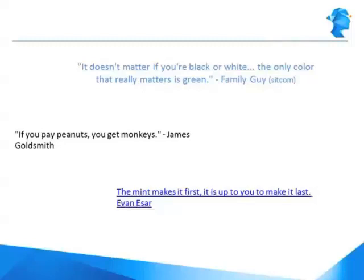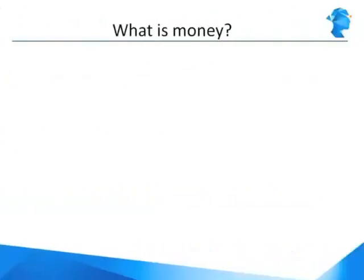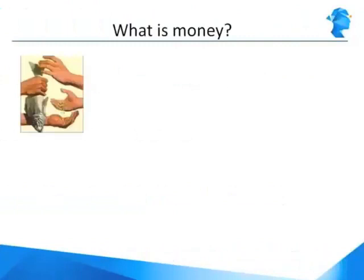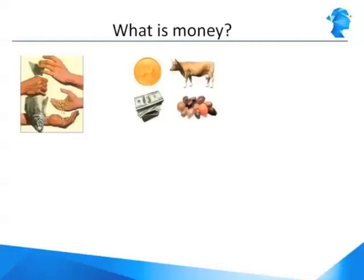Now what is money? It all started with the barter system. You had something which I wanted, I had something that you wanted, and therefore we exchanged — grain for fish, fish for grain. So both of us now have grain and fish. But this was a very tedious methodology.